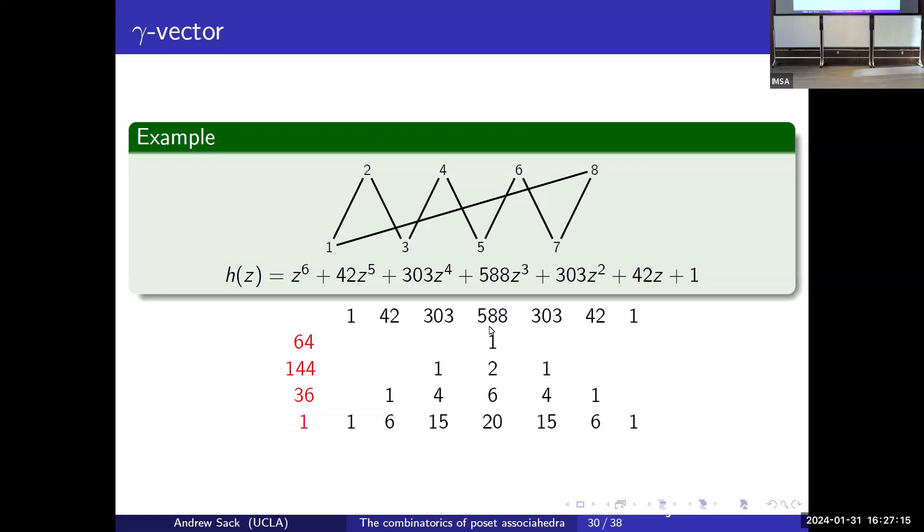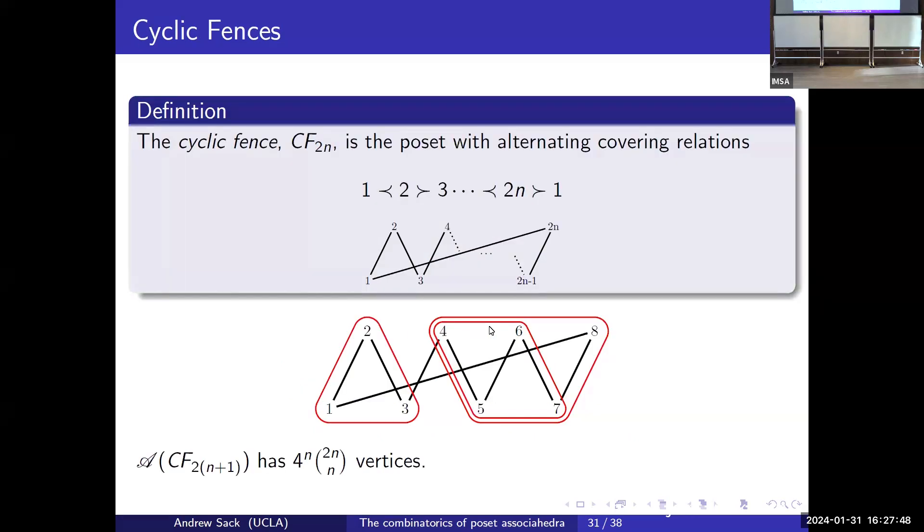I just want to talk a little bit about the gamma vector and gamma positivity if you haven't seen this. Here is a specific poset and the H-polynomial from its poset associahedron. One way to think about the gamma vector is we take the H-vector and we write it as a linear combination of rows of Pascal's triangle. The coefficients that we get are the gamma vector.